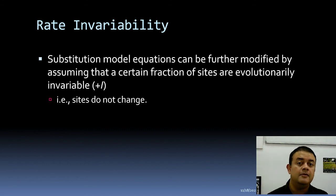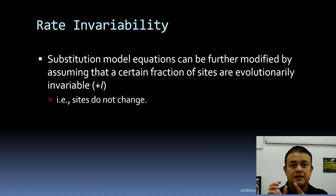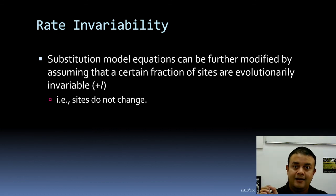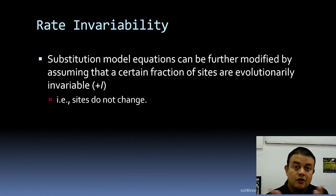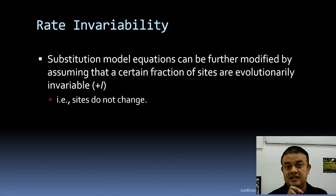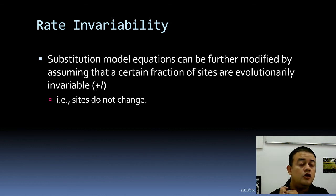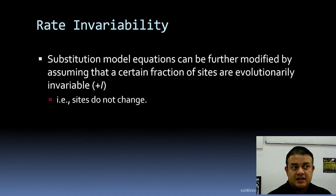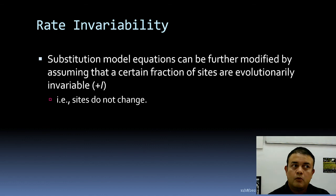Every single model — HKY, K2P, F81, GTR — can have its equation modified by adding +G, +I, or both +G+I together. This gives a large number of model variants. With +G, +I, and +G+I for each base model, you end up with many models. The question becomes: for your multiple sequence alignment dataset, which model should you choose?